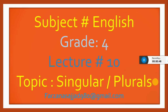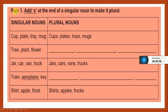Let's move towards the first rule. Look at rule number 1. It says add s at the end of a singular noun to make it plural. There are some nouns we add only s to change them into plurals. For example: cup, cups; plate, plates; tray, trays; mug, mugs. We have added only s to change these nouns into plural forms.